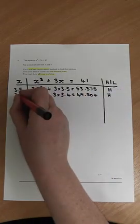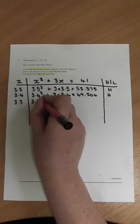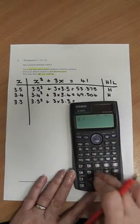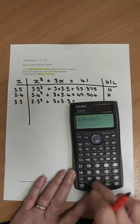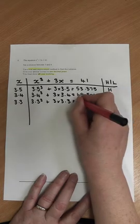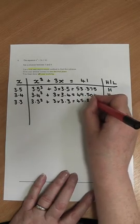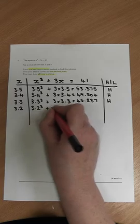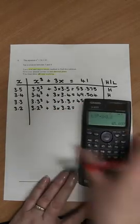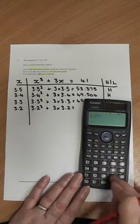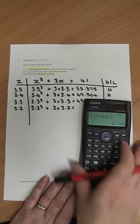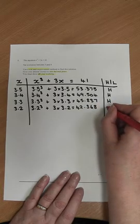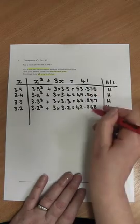So now I'm going to try 3.3 cubed and we're going to add 3 times 3.3. Again we're going to use the calculator and we'll get 45.837. Still too high. We'll now try 3.2. 3.2 cubed add 3 times 3.2. 42.368. Still too high. Very close now to 41 but we've still got an answer that's too high.